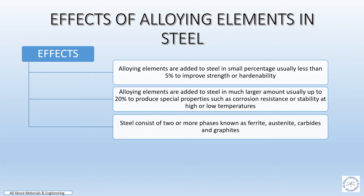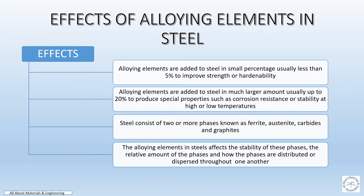Steel consists of two or more phases known as ferrite, austenite, carbide, and graphite. The alloying elements in steel affect the stability of these phases.